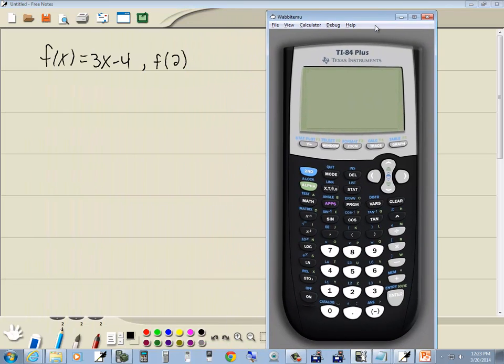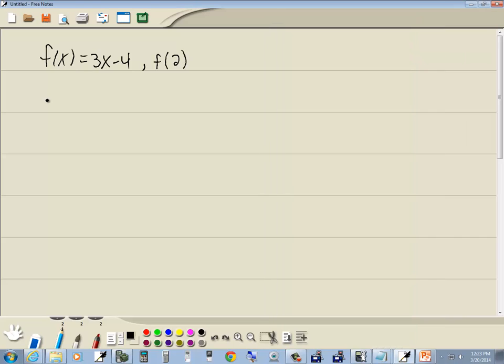Let's go to our calculator. I'm going to go to y equals, and I'm going to put in 3x minus 4. Now, think of what we've got here. y1 is equal to 3x minus 4. So I could change this notation here. Instead of f of x, we could say y1 is 3x minus 4.